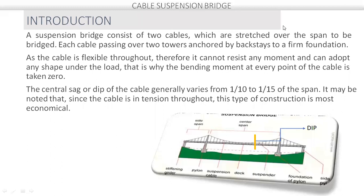A suspension bridge consists of two cables which are stretched over the strand to be bridged, each cable passing over two towers anchored by back stays to a firm foundation. The firm foundation means a solid foundation to stand the tower. This is the combination of two suspension cables which is passing over a tower.